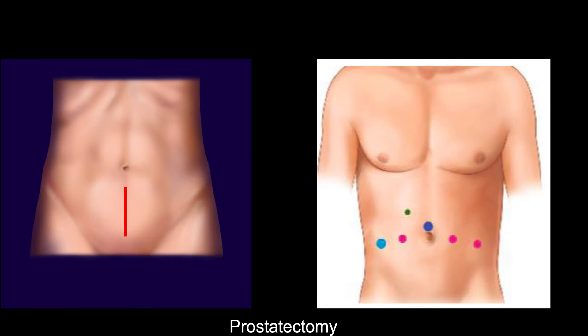Radical prostatectomy is the procedure in which the prostate, as well as the seminal vesicles, and potentially the lymph nodes are removed. Radical prostatectomy is typically performed through two surgical approaches. Through the open approach, a single incision is made below the belly button down to the pubic bone. Another type of approach is through the use of multiple small keyhole incisions, each ranging from the size of a dime to approximately the size of a quarter. This approach is often called minimally invasive surgery or laparoscopic surgery.